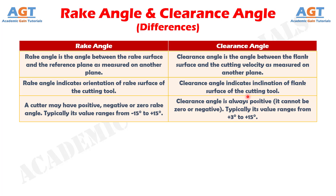Difference number 3: a cutter may have positive, negative, or zero rake angle. Typically its value ranges from negative 15 degrees to positive 15 degrees. Whereas clearance angle is always positive — it cannot be zero or negative. Typically its value ranges from positive 3 degrees to positive 15 degrees.